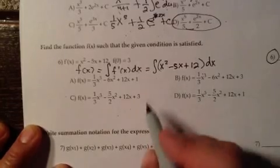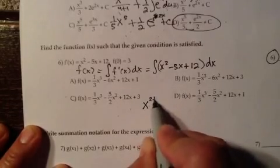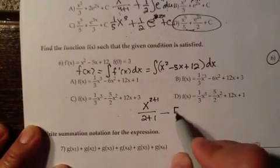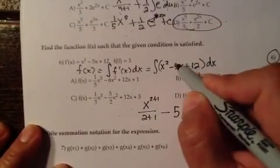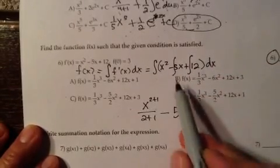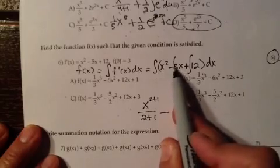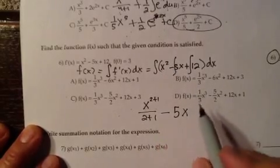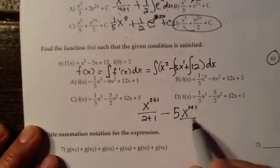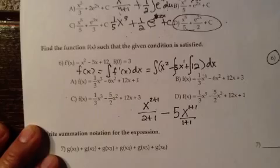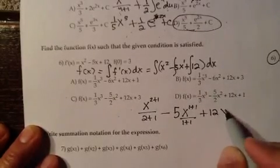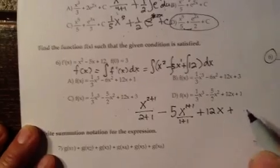We can integrate each term one at a time. To integrate x squared, we take x to the 2 plus 1 over 2 plus 1. When you have a constant times x, to integrate 5x, we bring the 5 out front and integrate x. X is to the first power, so we take that first power, add one to it, and divide by that 1 plus 1 number. When you integrate a constant dx, it's just that constant times x, and then we have plus c.